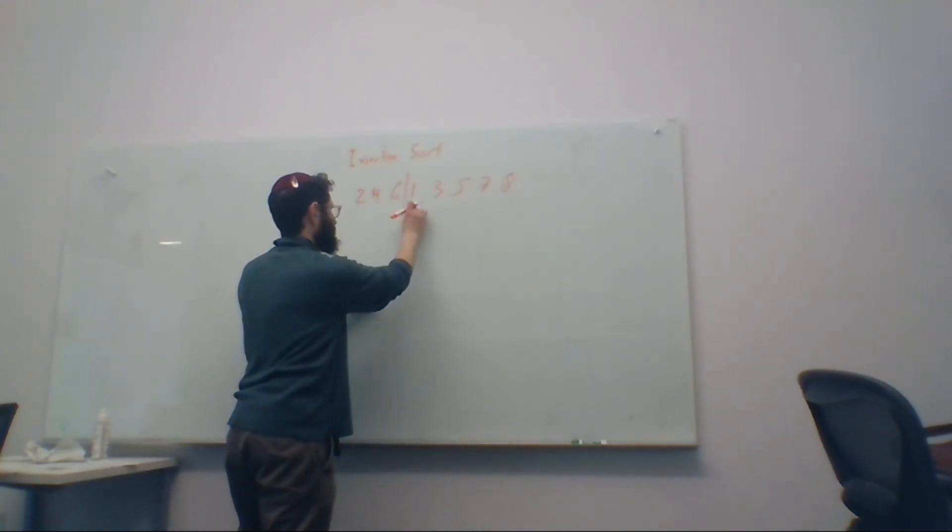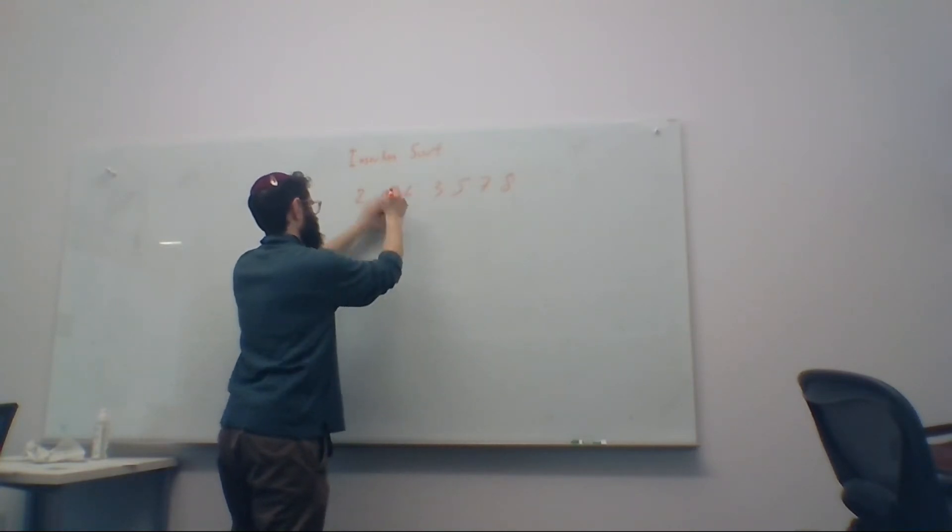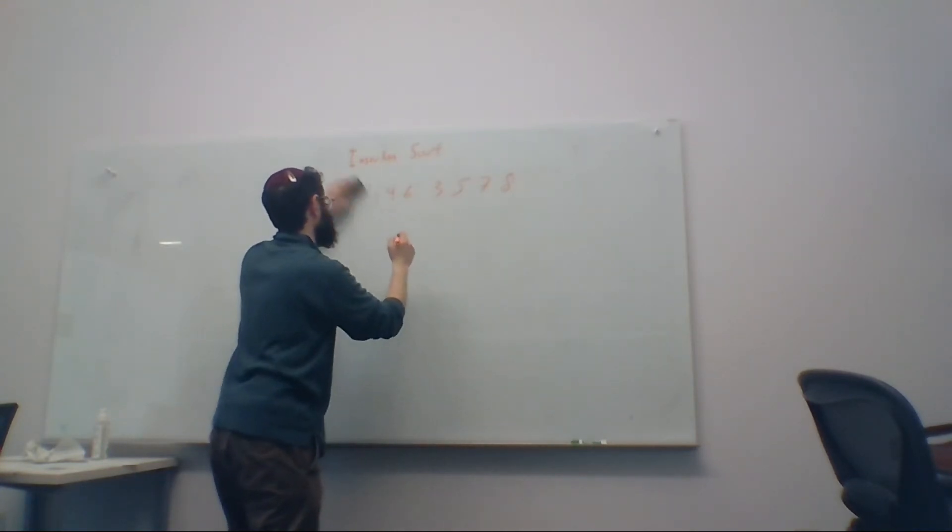So now we insert the next item. Compare one to six. Swap them. Compare one to four. Swap them. Compare one to two. Swap them. One's at the front, so there's nothing else to swap it against, so we stop.